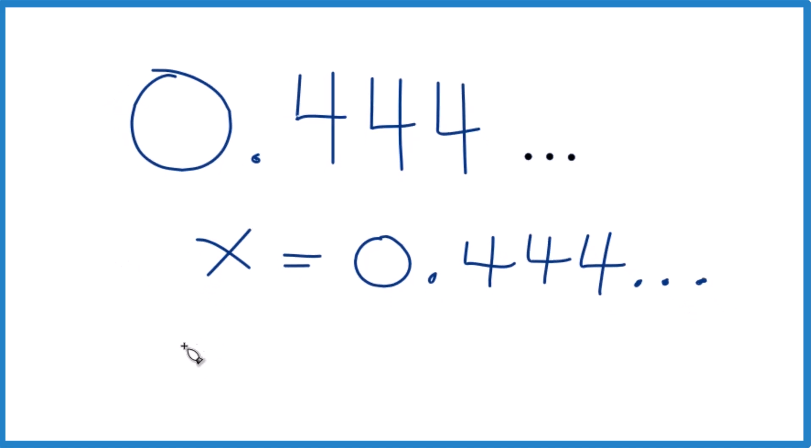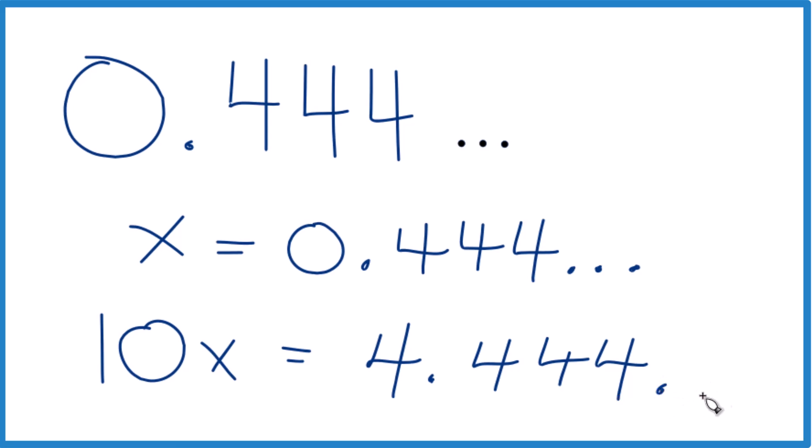So I'll multiply 10 times x, that'll give me 10x. 10 times 0.444, we get 4.444. The 4 just keeps going. That's a good step forward because now we have a whole number.